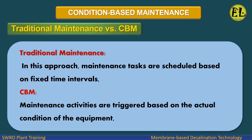In traditional maintenance, maintenance tasks are scheduled based on fixed time intervals. In CBM, maintenance activities are triggered based on the actual condition of the equipment.